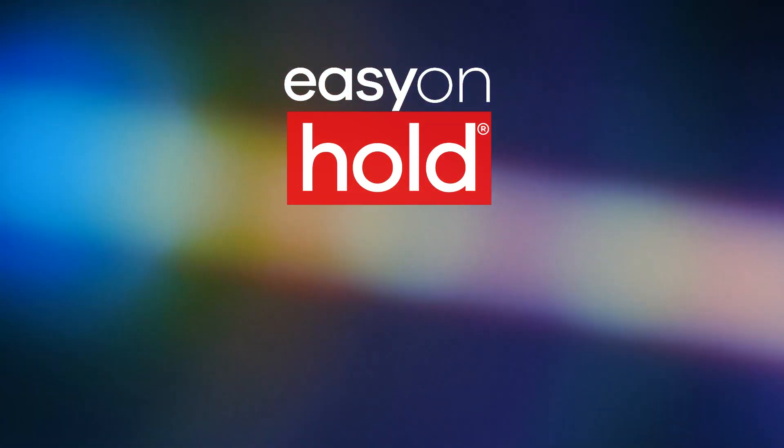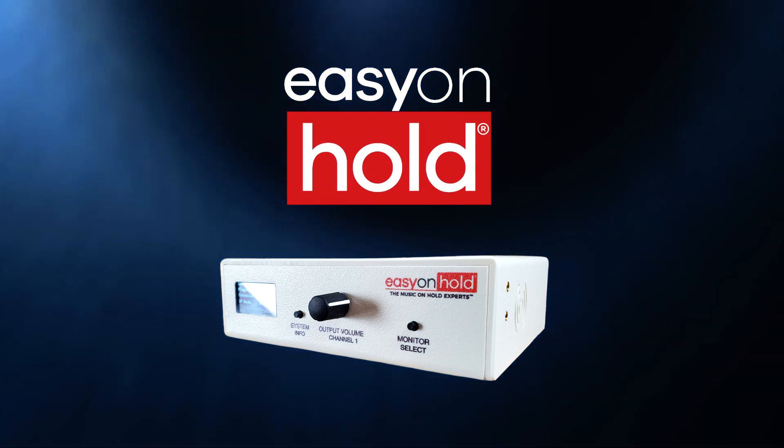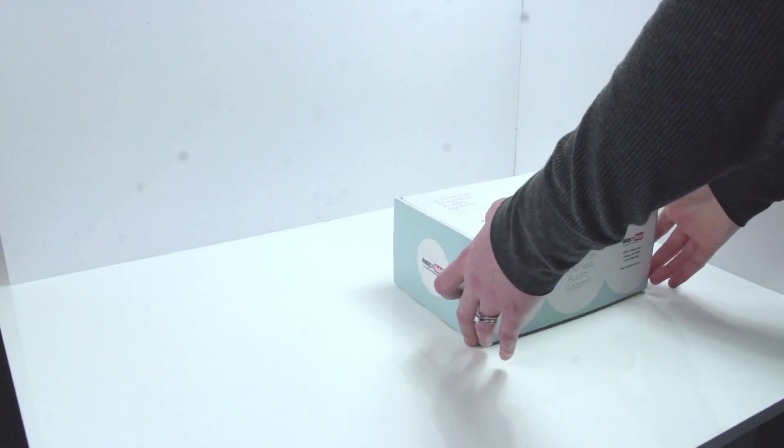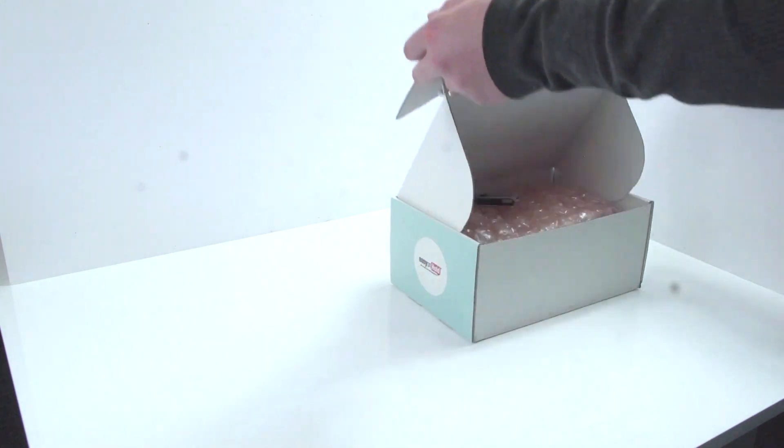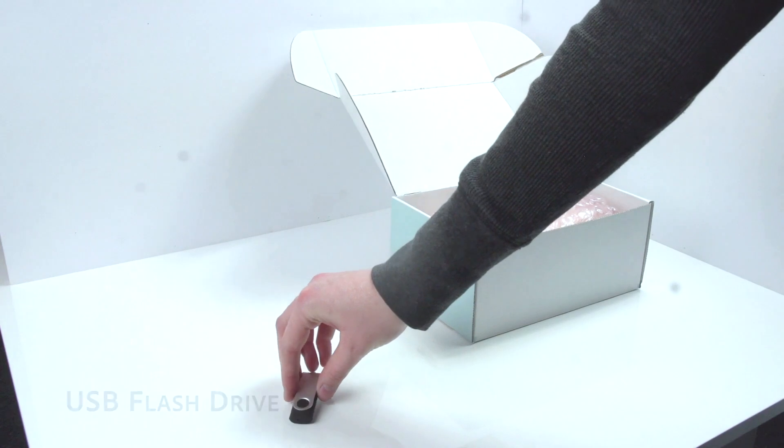The 2-Channel Business Music Audio System from EasyOnHold is a professional audio player device for music and messages on hold and overhead background music. The player uses a live stream over the internet or a USB memory drive.